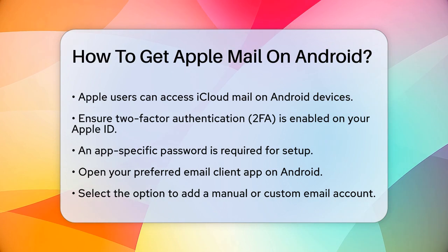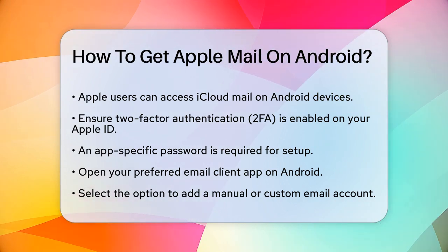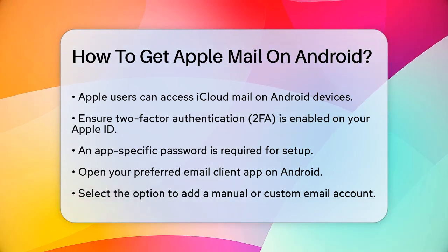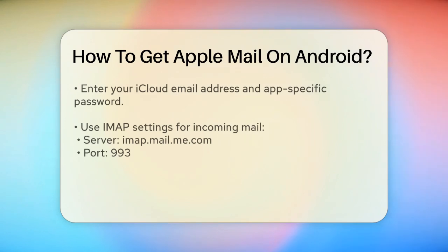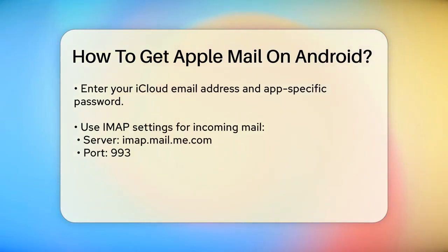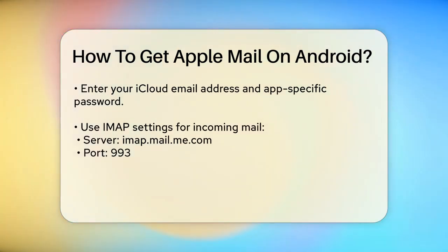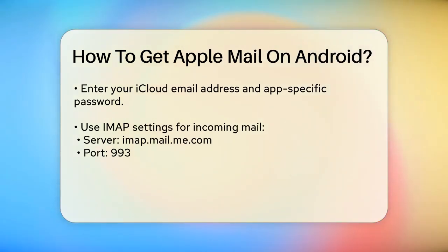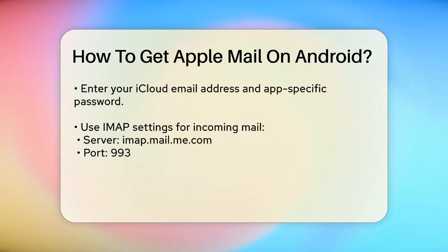To set up iCloud Mail on your Android device, you'll need to know the server settings. Here are the steps. Open your email client app on your Android device — this could be the default mail app or any other email client you prefer. When prompted to add a new email account, select the option to add a manual or custom email account. Enter your iCloud email address and the app-specific password you generated after enabling 2FA.